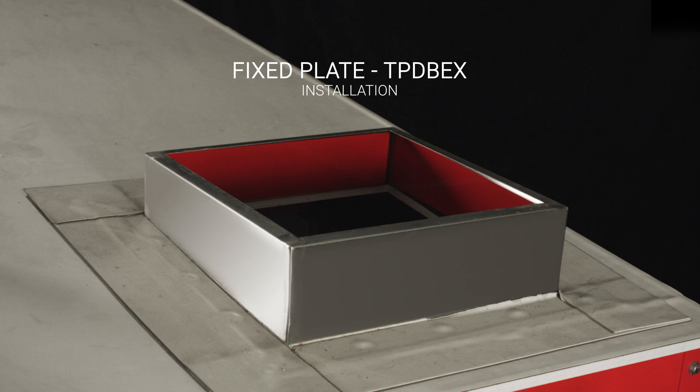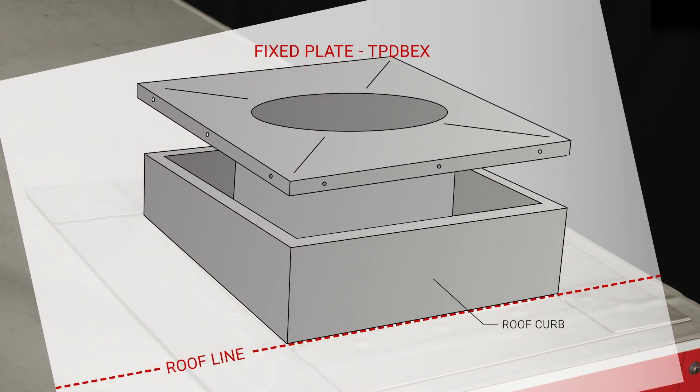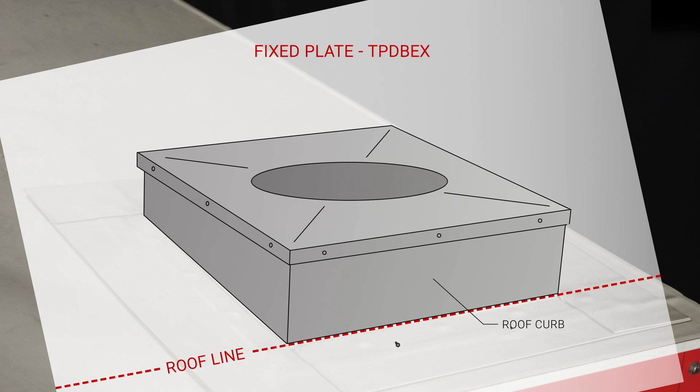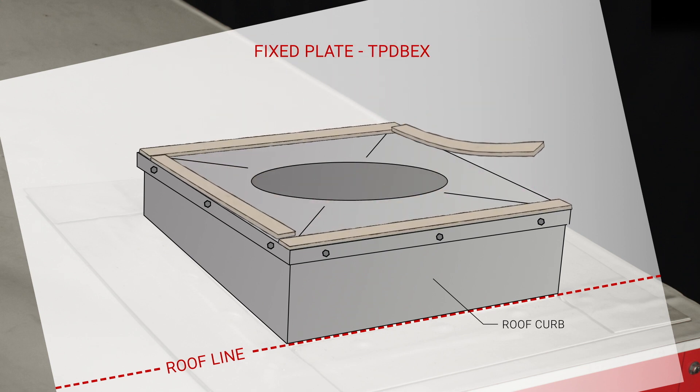To install a fixed TP DB EX plate, first place it on the curb. You can then secure the plate to the sides of the curb using three self-drilling fasteners per side. Lastly, add gasket material to the edges of the plate as shown.